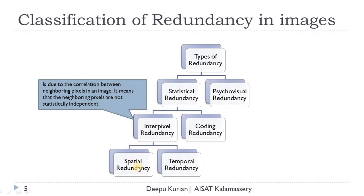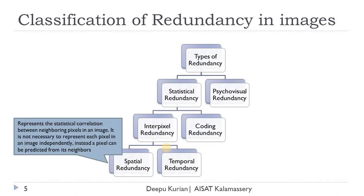Interpixel redundancy can be classified into spatial redundancy and temporal redundancy. Spatial redundancy represents the statistical correlation between adjacent pixels within an image. To make use of this redundancy in compression, we represent a particular pixel with the help of its neighboring pixels — a pixel can be represented as a prediction of its neighboring pixels. Thereby we can achieve compression by exploiting spatial redundancy.